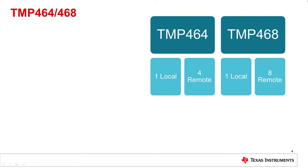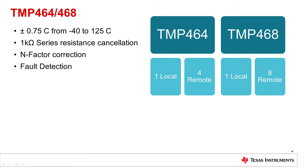Both of these devices have the same accuracy of plus or minus 0.75C from negative 40 to 125 degrees Celsius, with a typical error much lower than that. Both will cancel up to one kilo-ohm of series resistance, and both have n-factor correction and fault detection, which will help to diagnose connection errors with your remote transistors.